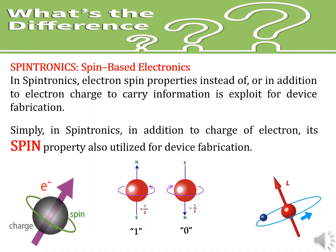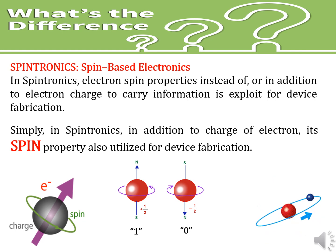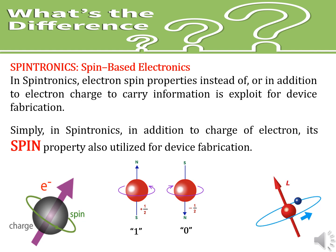What is the difference between traditional electronics and spintronics? The only difference is that in spintronics, the electron spin properties, instead of or in addition to electron charge, are exploited to carry information for device fabrication. In spintronics, in addition to the charge of the electron, its spin property is also utilized for device fabrication.